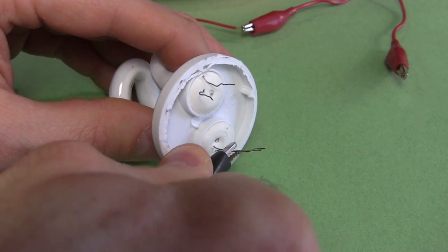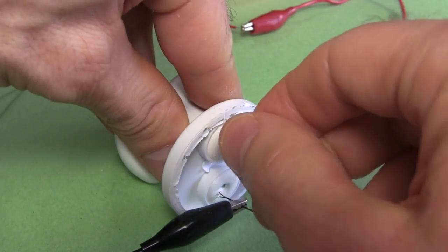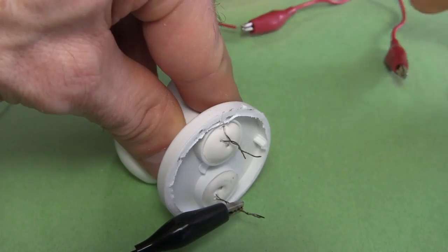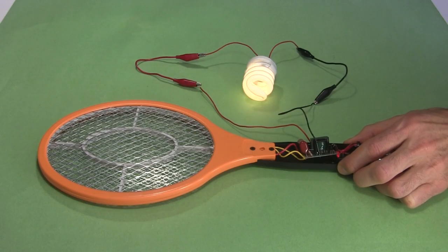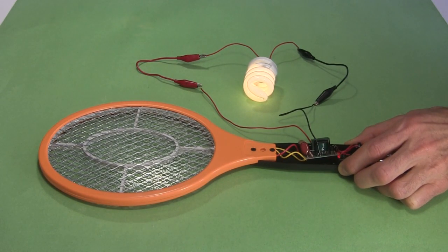I connect up a 5 watt CFL. There are two wires for each end of the tube, so I make sure to connect to both of them. Which way it goes doesn't matter. Turning it on, it works. I try it with a 13 watt tube that I'd previously soldered wires to. That also works.